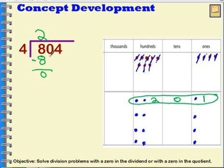Now I'm going to look at my tens place. In my tens place, I have zero tens. So I'm not going to be able to put any tens into my group. So I'm putting zero tens in my group. Zero times four is zero. And when I subtract, I get zero.